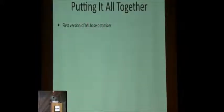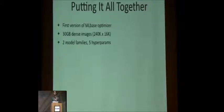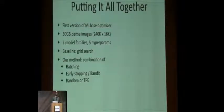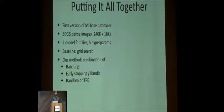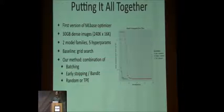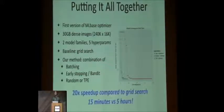With these three optimizations in mind, let's put it all together. We're calling this the first version of the ML-based optimizer. These experiments are on a modest 30-gigabyte dataset, looking at two different model families with five hyperparameters. Our baseline is sequential grid search. We try our combined approach of batching, the bandit-based approach, and either random search or TPE — the ones that performed best in our small-scale experiments. On the x-axis is time spent, y-axis is validation error. The punchline is we get roughly a 20x speedup compared to grid search — something you can do over lunch versus something that would take almost the whole day.